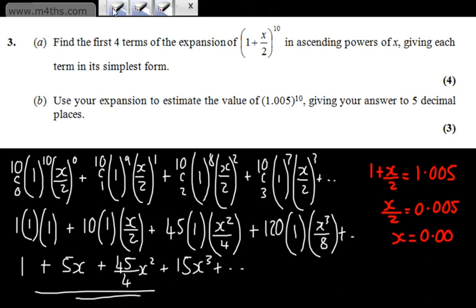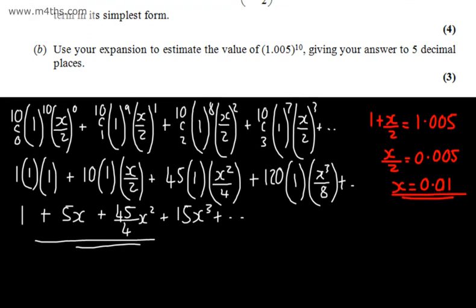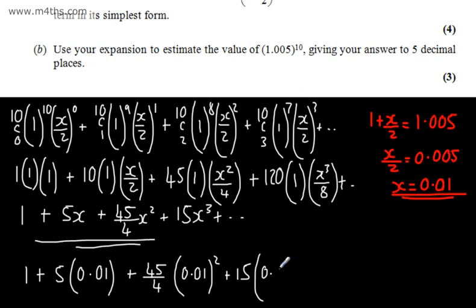So let's just put that in, 0.01. So that is going to be my value for x, which we're going to sub in here and find an approximation. So that is what I'm going to plug in. So let's go ahead and show that. So we will have 1 + 5 lots of 0.01, plus the 45/4, so 45/4 lots of the 0.01, which we need to square, plus 15 lots of the 0.01, which we need to cube.